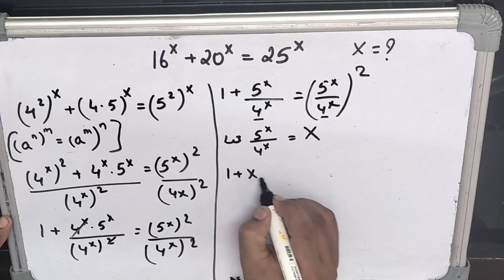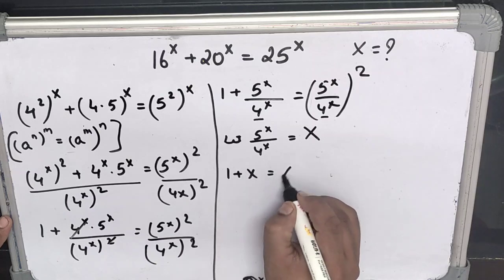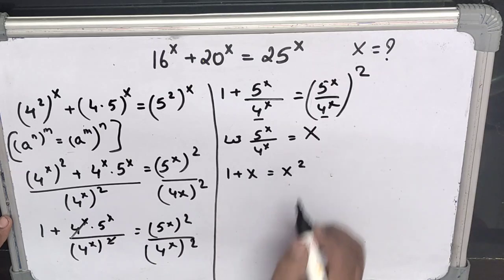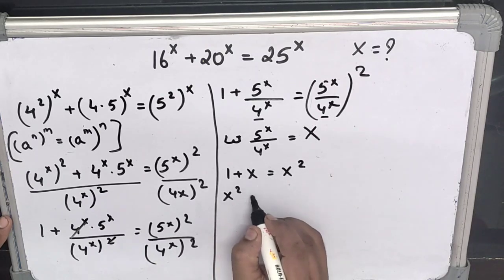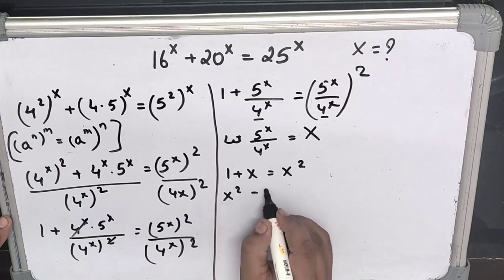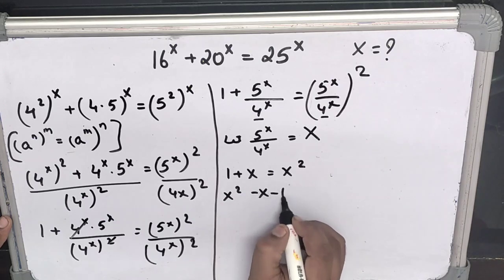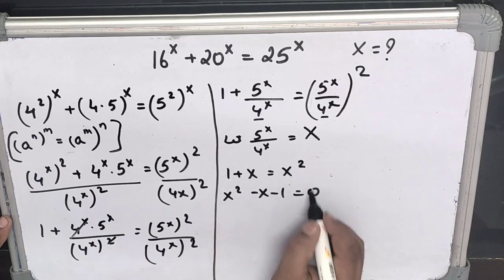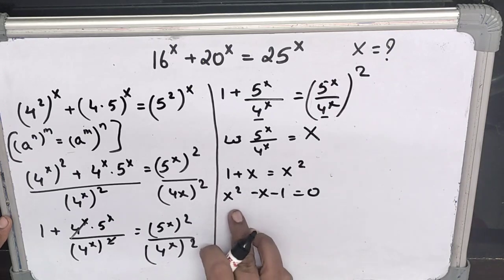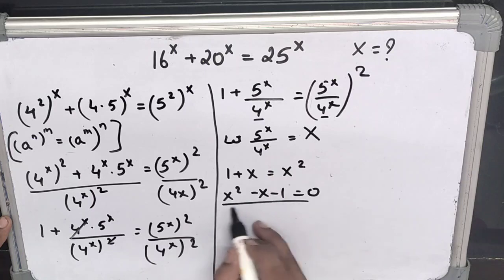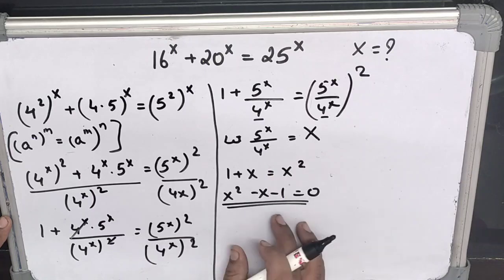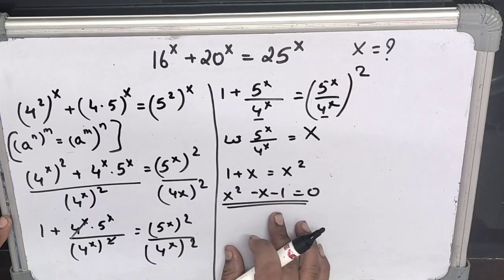Substituting, we get 1 plus X equals X squared. This can be rewritten as X squared minus X minus 1 equals 0, which is now in the form of a quadratic equation.